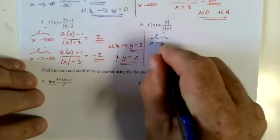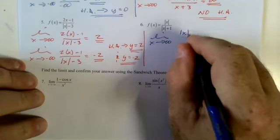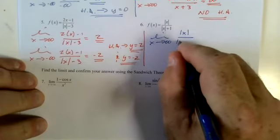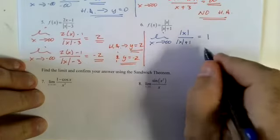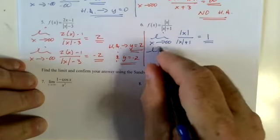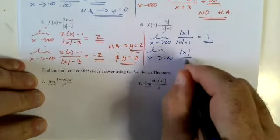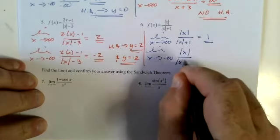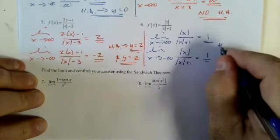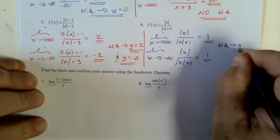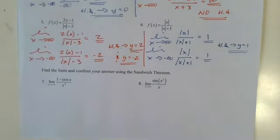Limit as x approaches infinity — going to be positive, going to be positive, coefficients are one — they're both going to be positive one.